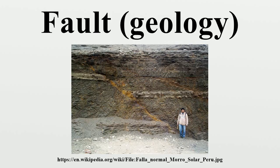Based on direction of slip, faults can be generally categorized as strike-slip, where the offset is predominantly horizontal parallel to the fault trace; dip-slip, where offset is predominantly vertical and/or perpendicular to the fault trace; and oblique-slip, combining significant strike and dip slip.